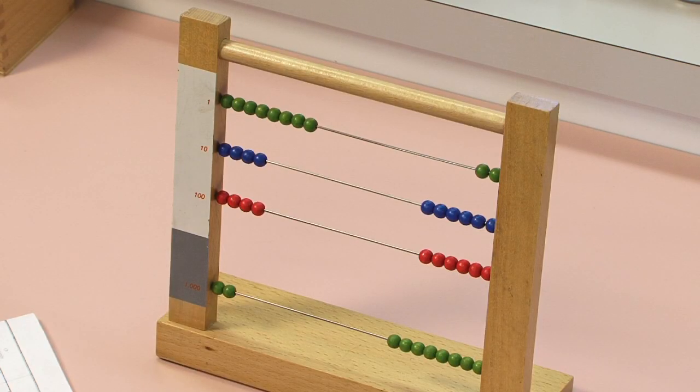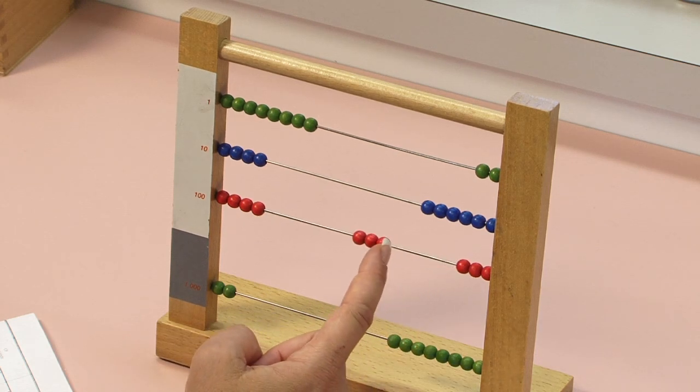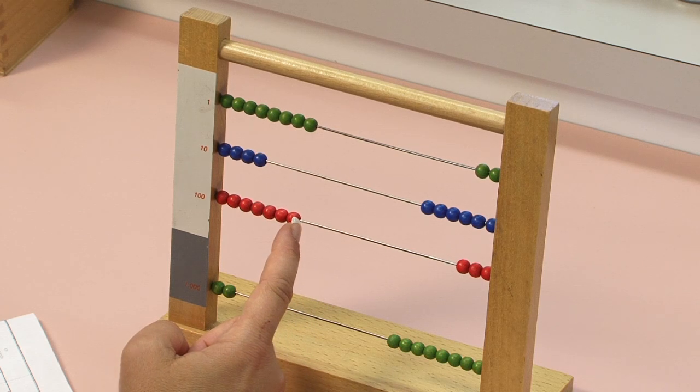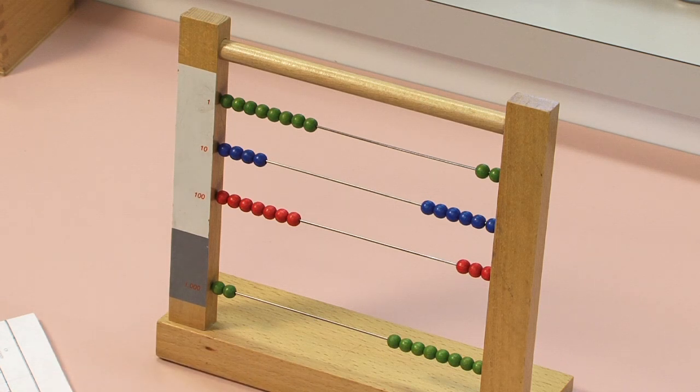Now, in the hundreds, I'm going to take away three. One, two, three. I'm taking away three. And one, two, three are left. Three is the answer you will write down in the hundreds place.